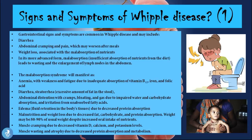In its more advanced form, malabsorption and insufficient absorption of nutrients from the diet leads to wasting and the enlargement of lymph nodes in the abdomen. The malabsorption syndrome will manifest as anemia with weakness and fatigue due to inadequate absorption of vitamin B12, iron, and folic acid. There will also be diarrhea with steatorrhea, meaning an excessive amount of fat in the stool, because if that fat is not being absorbed by the small intestine it enters the large colon and comes out in the feces.